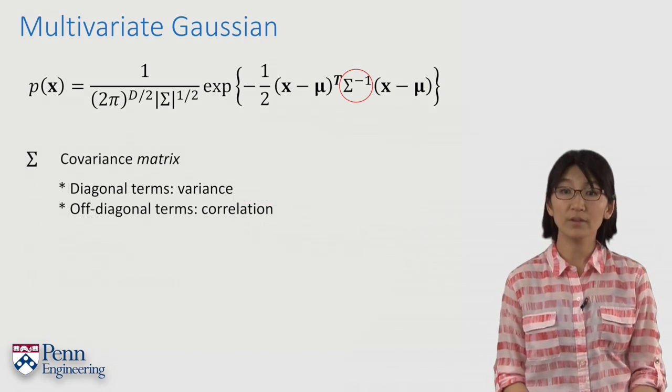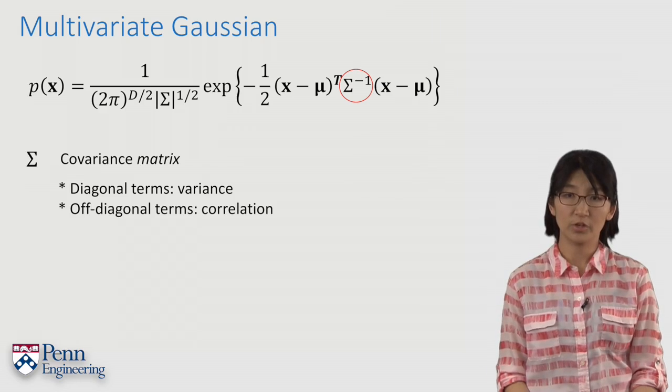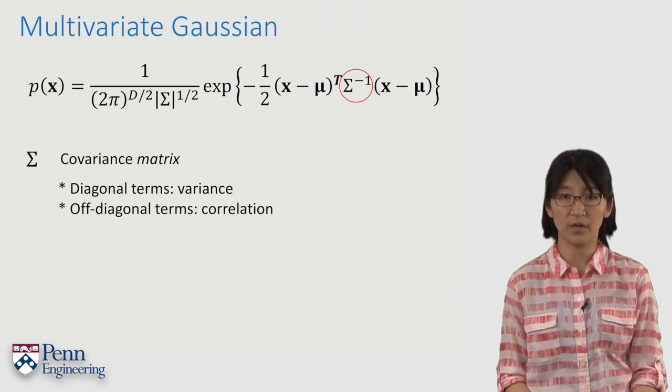In our covariance matrix, there are two key components, the terms in the diagonal and the terms in the off-diagonal.